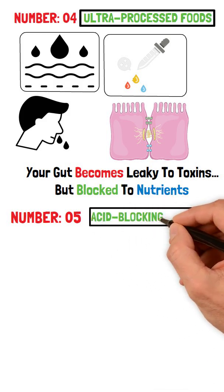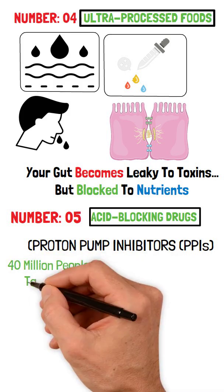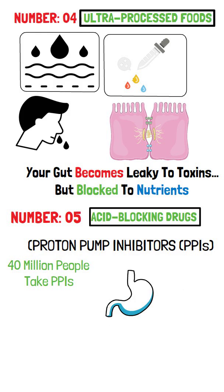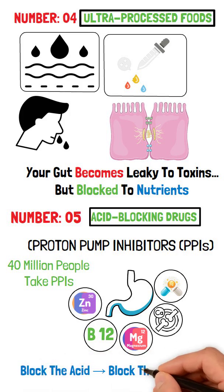Number 5: Acid-Blocking Drugs, Proton Pump Inhibitors PPIs. 40 million people take PPIs, but stomach acid is required to absorb iron, calcium, magnesium, B12, and zinc. Block the acid, block the absorption.